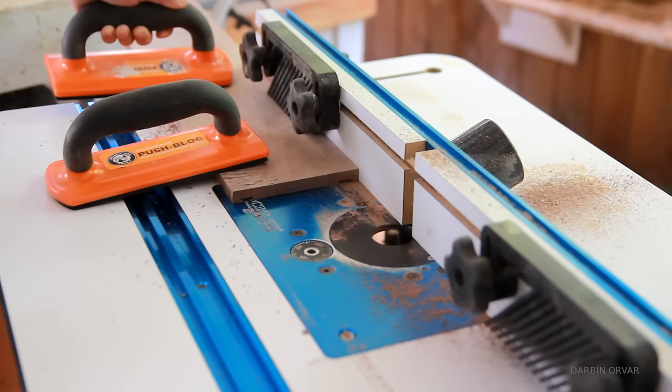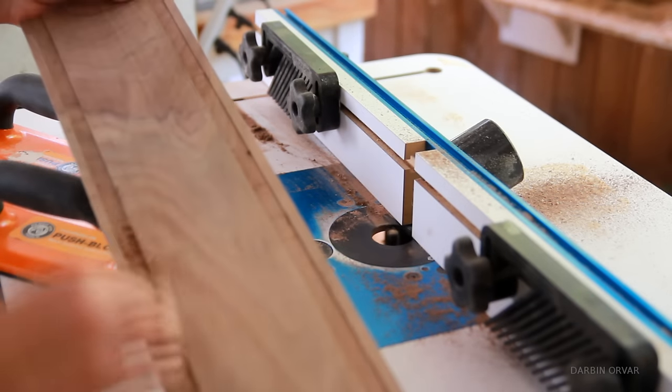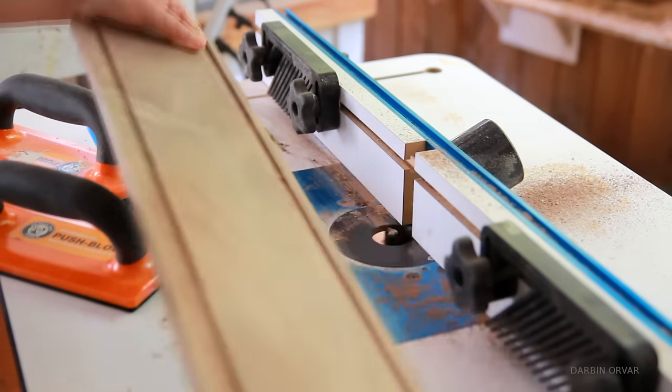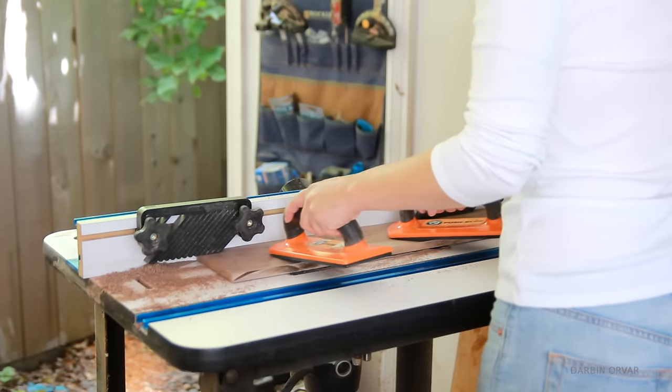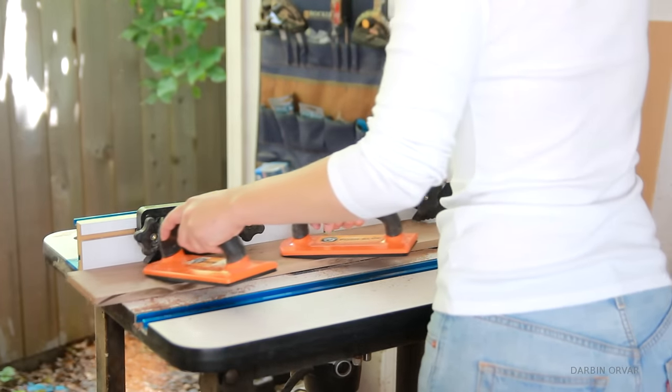So two dados in each piece here, one for the front and one for the back. And it's a lot easier to add the dados before cutting the wood to size.